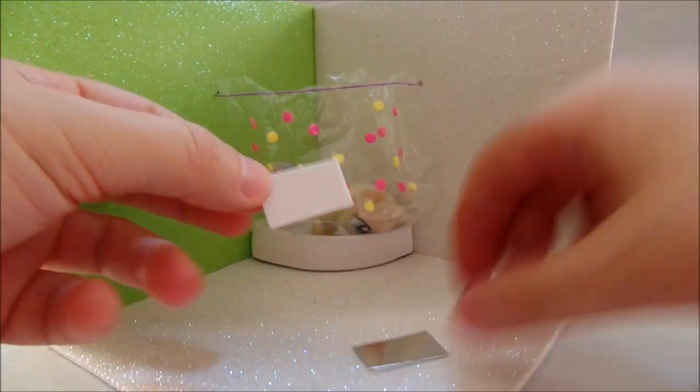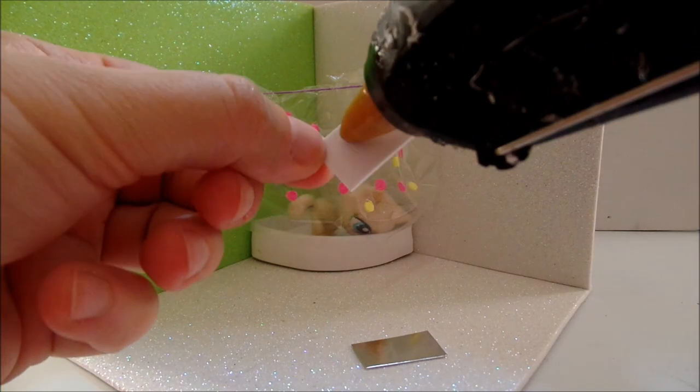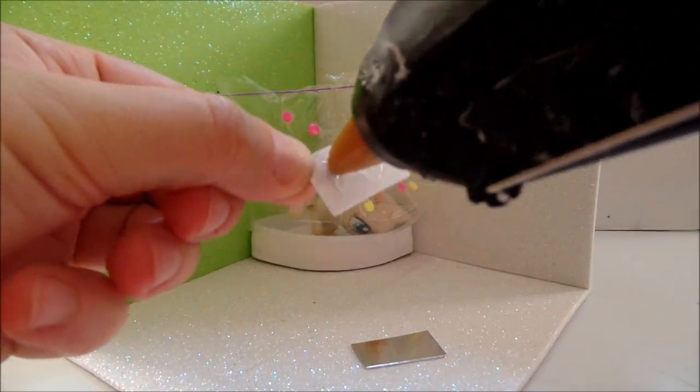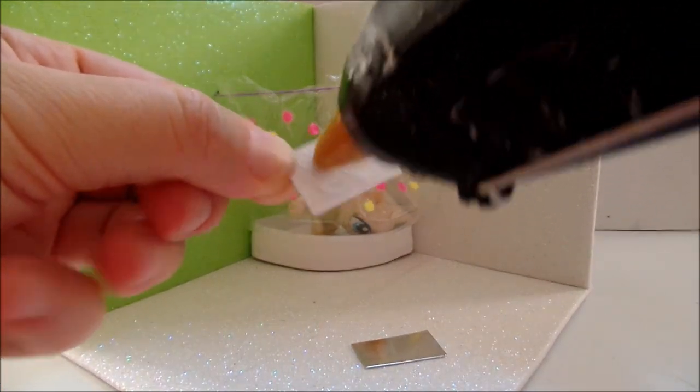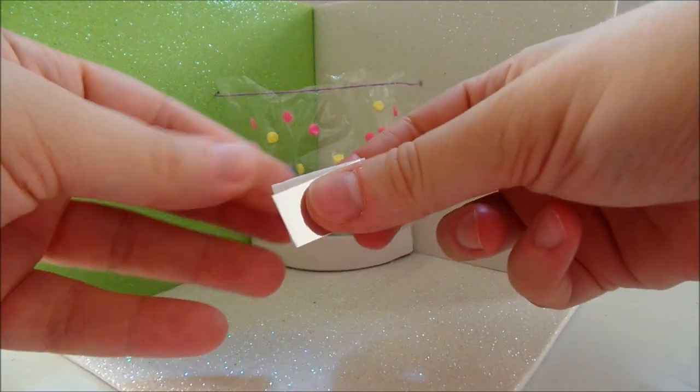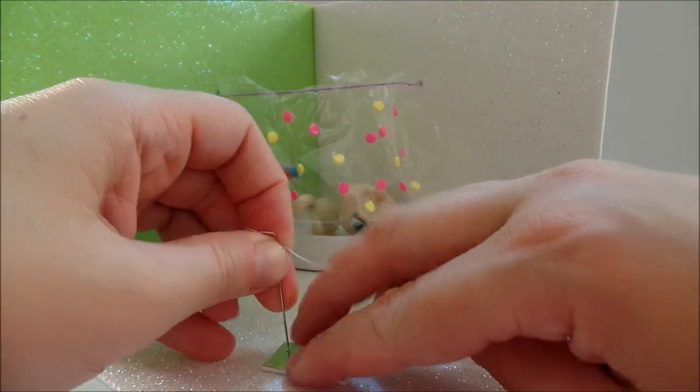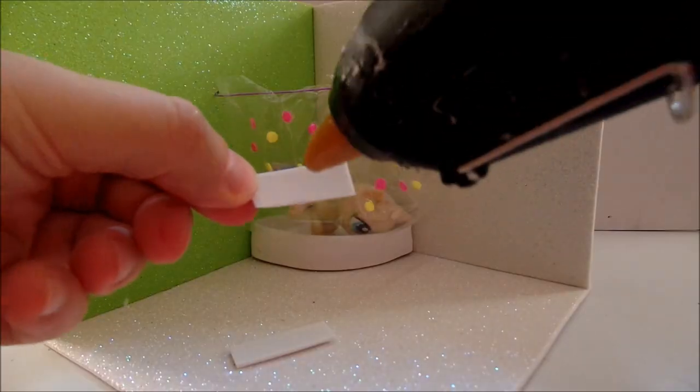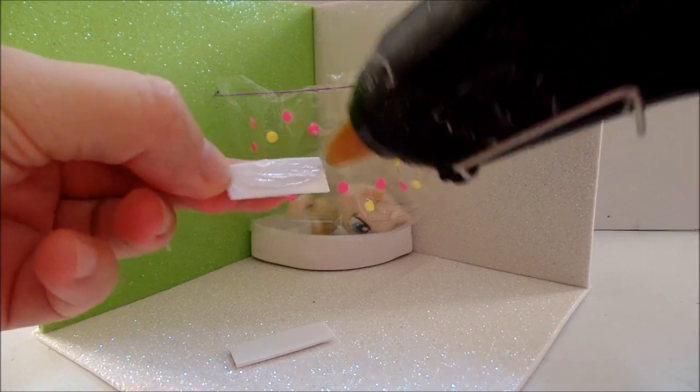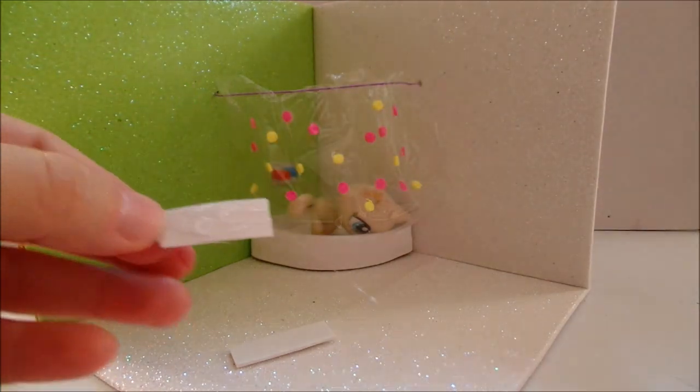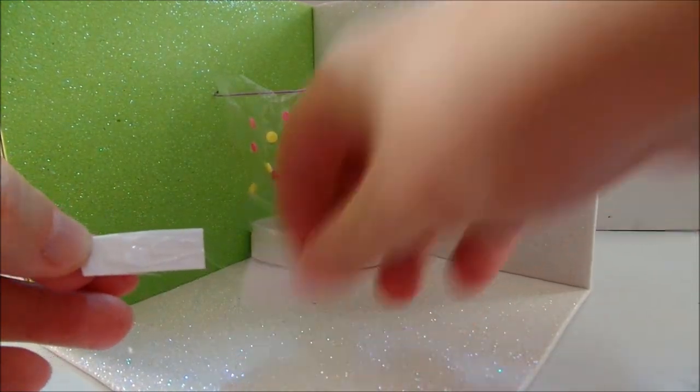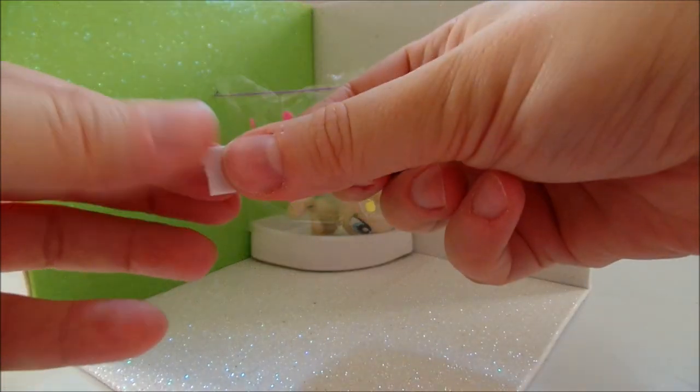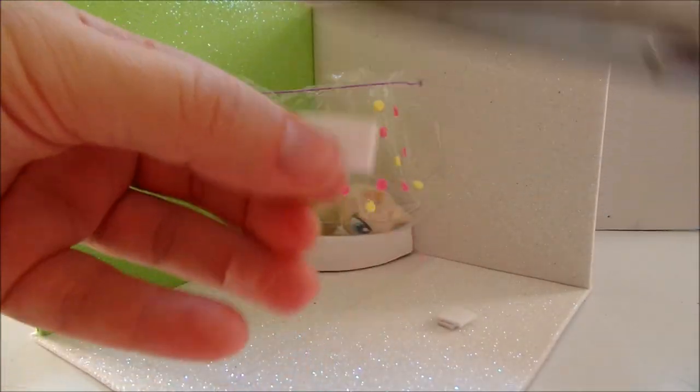For the shower head I glue together a square of white foam and a piece of silver paper. I punch holes with the needle. I glue together two pieces of foam. Again you can use cardboard, it's really not a must. Cut out a strip.